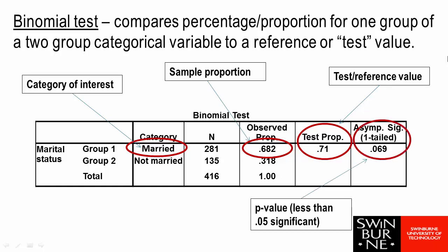Our very end box gives us our p-value. We're treating a p-value of 0.05 or less as being significant. In this case the p-value is 0.069, so that's telling me that in fact I don't think the proportion of married people is significantly different from my test value of 0.71.